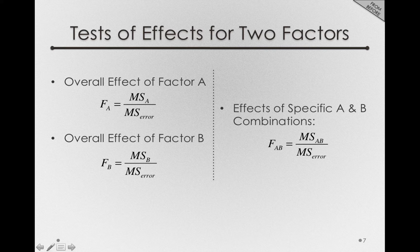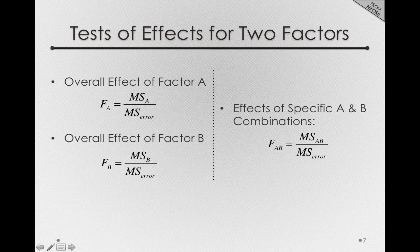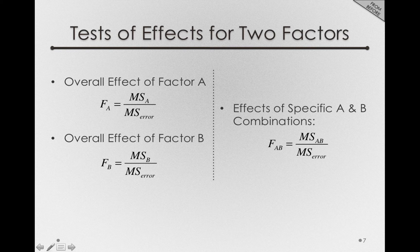For the test of the overall effect of factor A, we'll still form a mean square for factor A and divide it by the mean square for error. That will give us the F statistic observed for the overall effects of factor A. The same thing is true for the overall effect of factor B — we'll still form a mean square for factor B and divide that by the mean square for error, which will give us the F statistic for the overall effect of factor B.